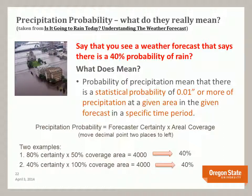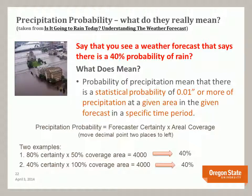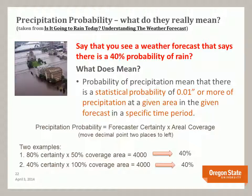You can also get 40% through a different combination. Say there's a 40% certainty but the rainfall is going to cover the whole area — 40 times 100 equals 4,000, moving the decimal point two places to the left again gives you 40%. So notice that the probability is a function of two things: the certainty that precipitation will occur, and the coverage area.